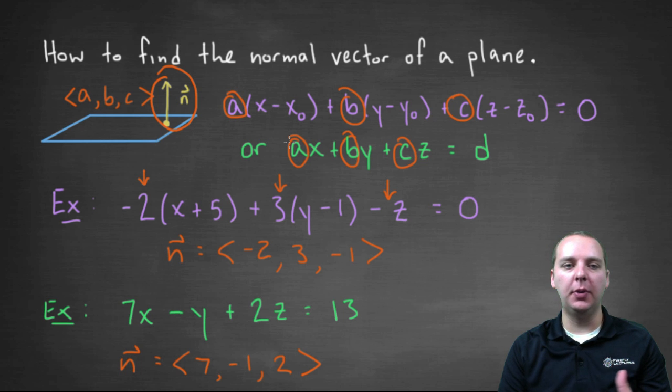And any other vector that's normal to the plane is simply going to be a scalar multiple of this vector here that you found. So any scalar multiple of negative two, three, one, such as negative four, six, negative two,